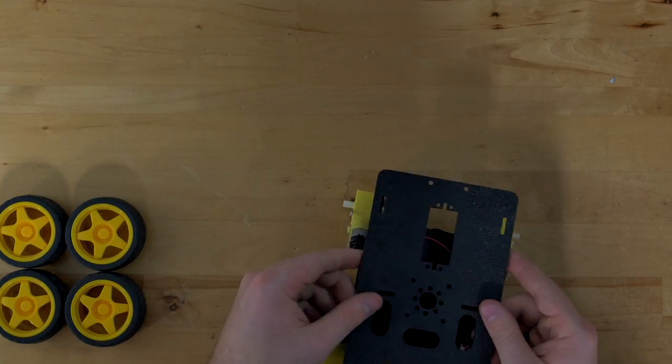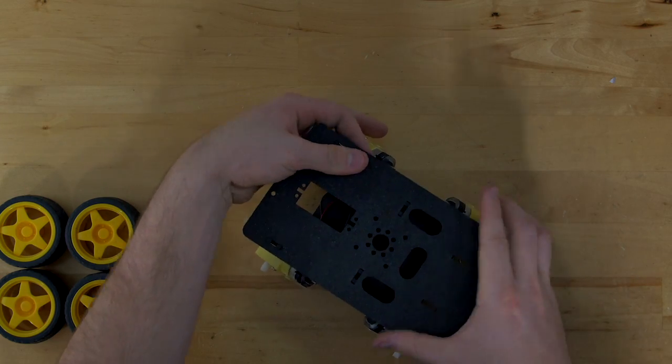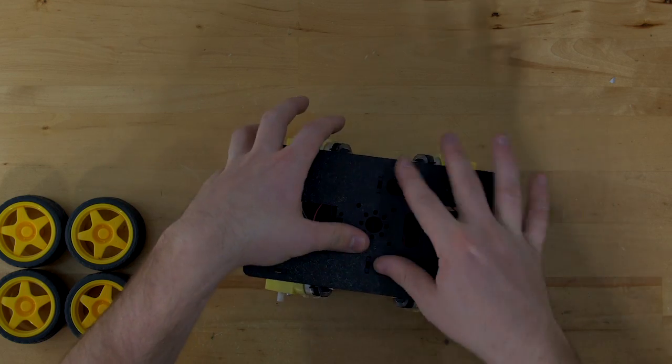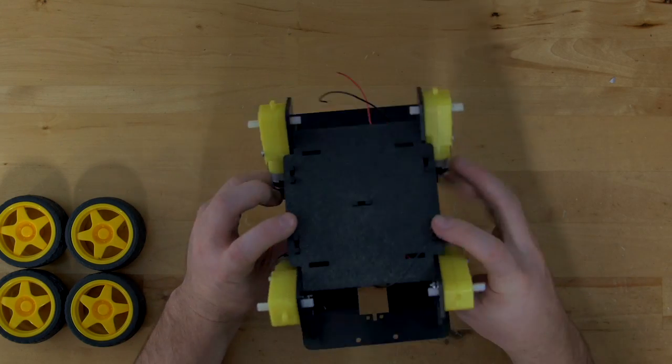After that's together, snap your top plate in place. You'll notice this plate isn't really symmetrical like the rest of the pieces, but because the rest of the kit is symmetrical, it won't matter which way you snap it on.